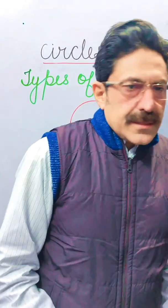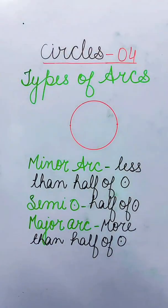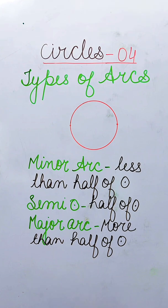Types of arcs. In previous video, we have done that three types of arcs are minor arc, semicircle and major arc.